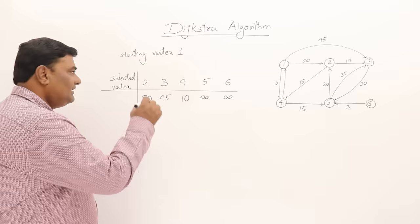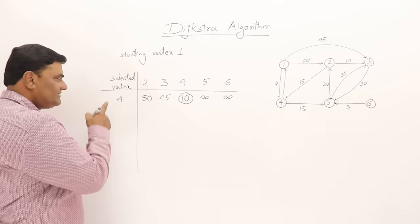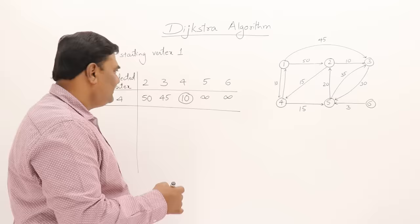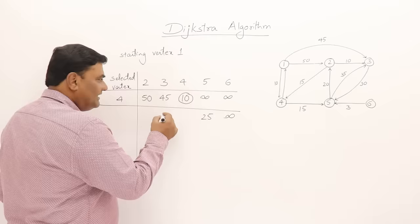The smallest vertex distance is 10, so select vertex 4. Once vertex 4 is selected, from 4 vertex 5 is connected. Can we relax it? The distance to 4 is 10, plus 15 is 25 — yes, 5 can be modified from infinity to 25. Vertex 6 remains infinity. The distances 45 and 50 remain as they are.